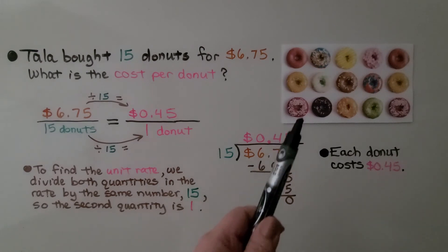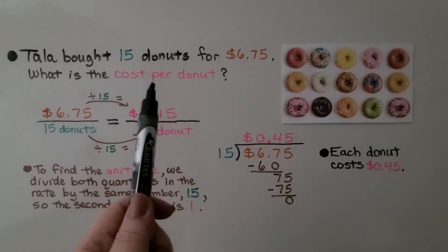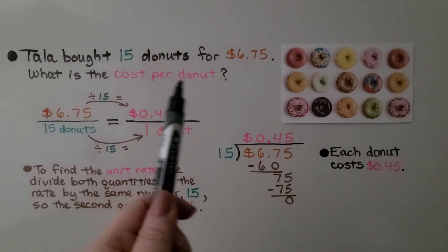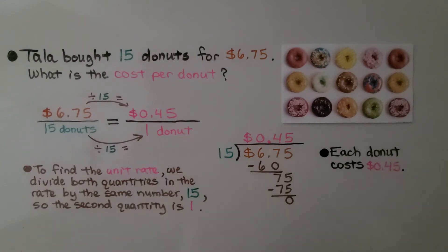Tala bought 15 donuts for $6.75. What is the cost per donut? So we need to find the price for one donut, because remember, per means each. That's each donut. It's one donut. Here's our rate. We have $6.75 over the 15 donuts.